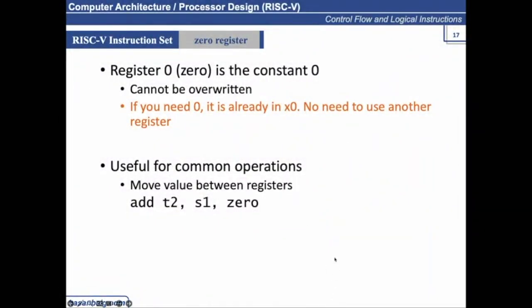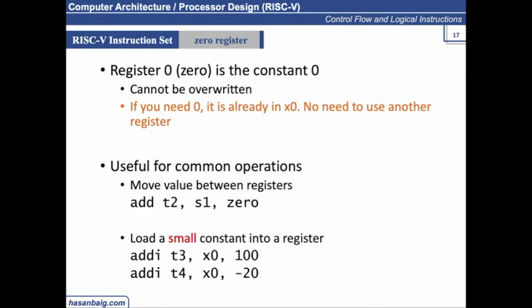Similarly, you might also need to load a small constant into a register. For example, when you start writing your code, which you will be doing today in an activity, you might need to initialize a variable to a certain value, like x equals zero, or sum equals zero, or sum equals 100. Sum equals 100 means you are initializing a variable named sum with value 100. How can you initialize it here? With the help of x0 and 100.